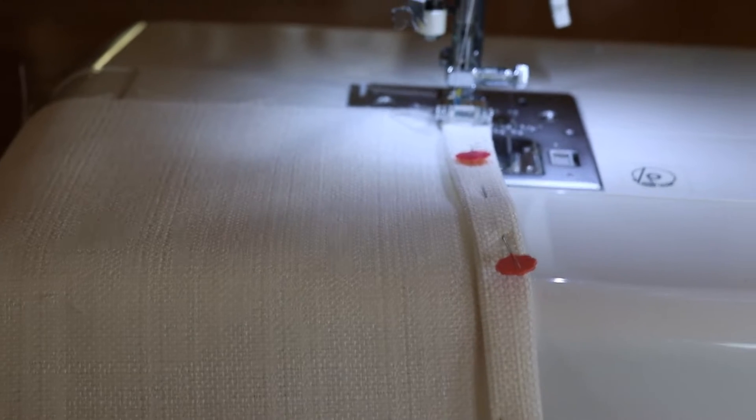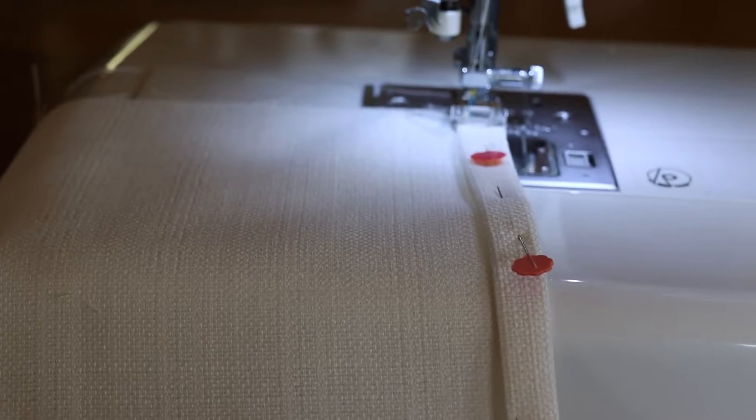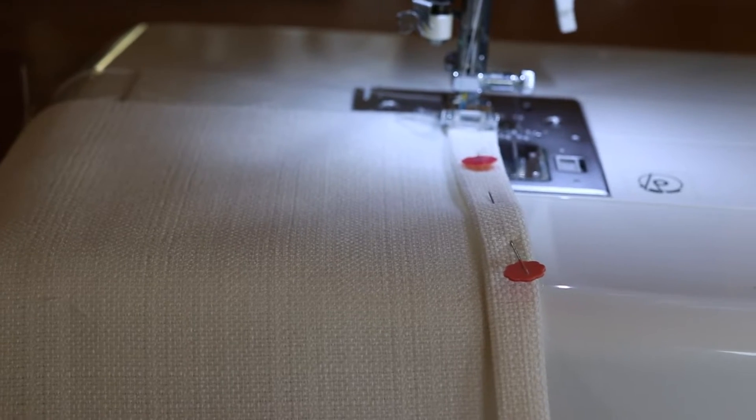Step one, once the fabric is cut out to the right size, is just to sew a simple straight hem down both sides, the short sides, and pin and sew together. Once you've done the side hems you just repeat along the bottom all the way along one of the long edges, but leave the top one unhemmed for now.